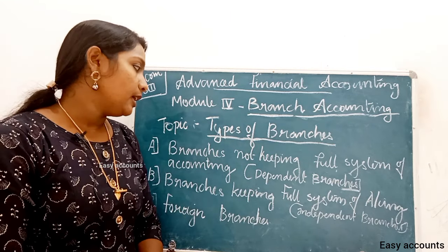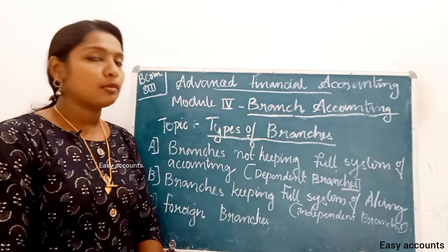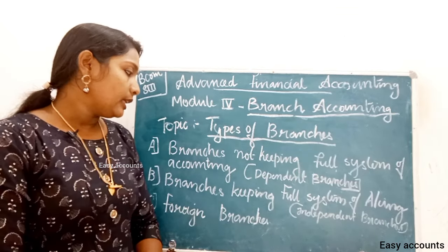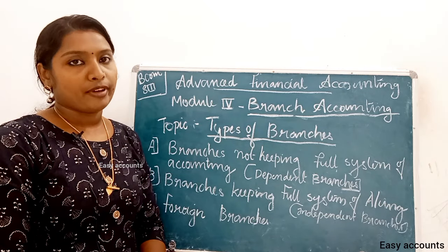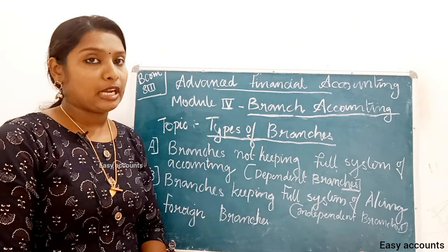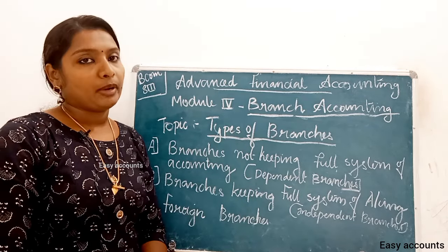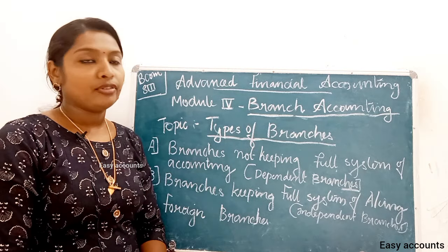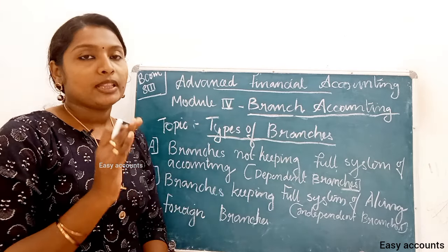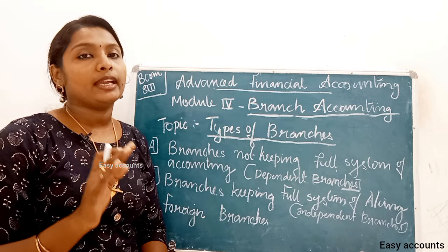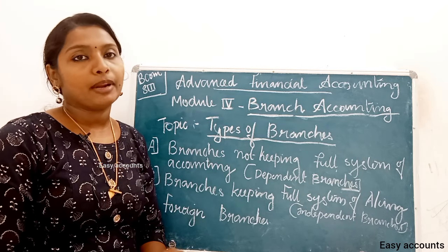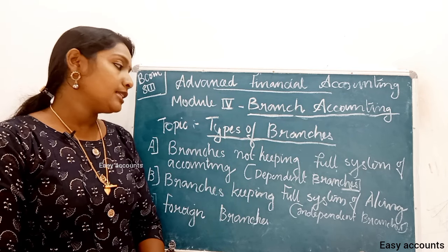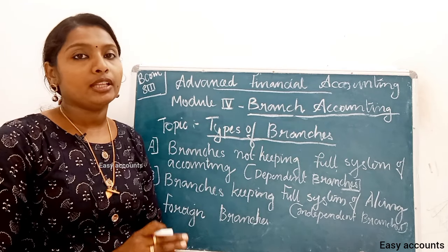First, Branches Not Keeping Full System of Accounting — we call these Dependent Branches. Second, Branches Keeping Full System of Accounting — we call these Independent Branches. We also have Foreign Branches.